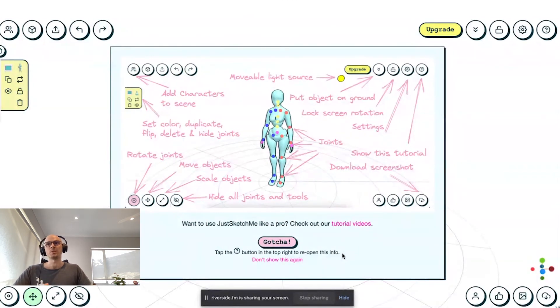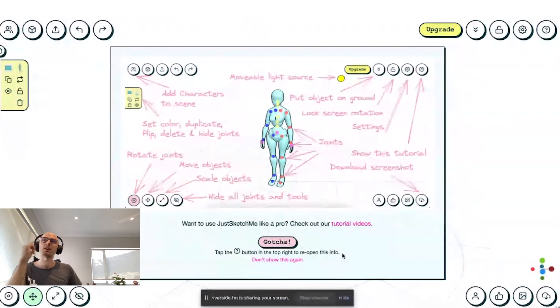You now, once you have that context, can go and watch a video and be like, oh, okay. So if I add a prop to the scene, like a sword, and then I click this button and I click on the character's hand, it will move the sword into their hand. And now when you articulate the character, it will articulate with the sword. That's sort of more of a pro move.